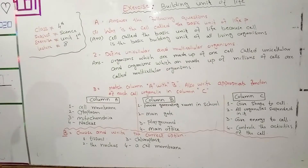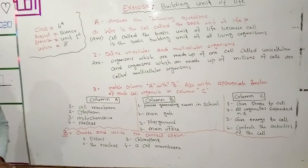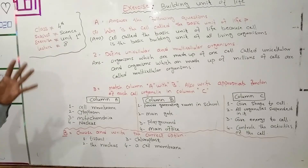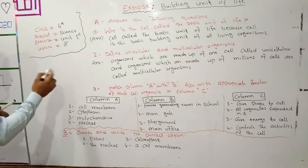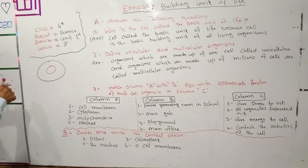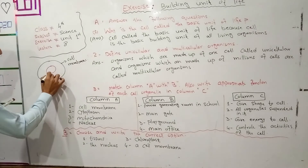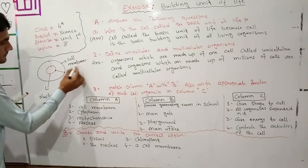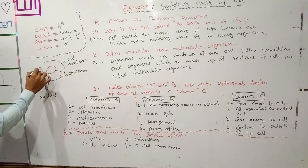Question number 3: match column A with column B and also write appropriate functions of each cell organelle in column C. We have the cell organelles written. For example, that is the animal cell. In the animal cell, the outermost layer is the cell membrane. The center contains the nucleus. We also have the nuclear membrane, plasma membrane, and cytoplasm.